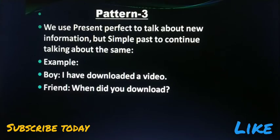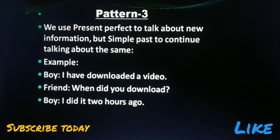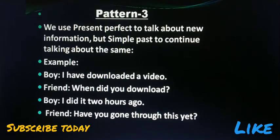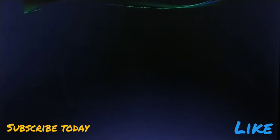The boy replies: 'I did it two hours ago.' Because the word 'ago' indicates it happened in the past, he uses simple past tense. The friend then asks: 'Have you gone through this yet?' — the word 'yet' indicates the action may not have happened yet, so present perfect tense is used. Let's move to pattern four.